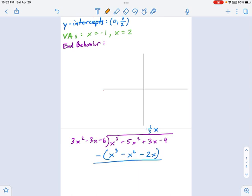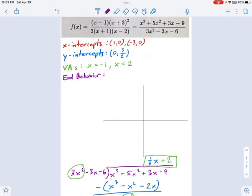So the x cubed cancel out, 5x squared minus negative x squared, that's going to be 6x squared, and 3x minus negative 2x, that's going to be 5x. So how many times does 6x squared get divided by 3x squared? That's just 2. I don't care about remainders, so this is my oblique asymptote. That is what I need to put in here.